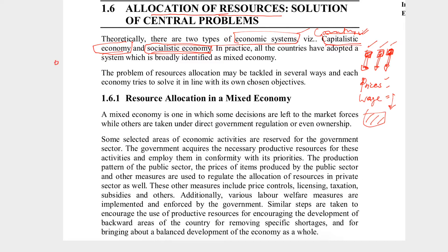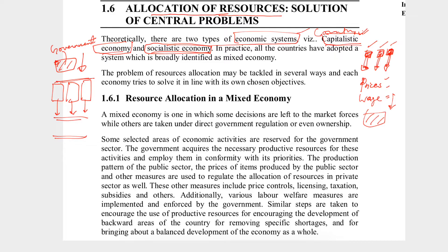If we talk about a socialistic economy, there is one owner — the government. Government becomes the owner of everything. In a socialistic economy, the government owns everything, produces all goods, and fixes rates so people don't face difficulties. In a fair socialistic economy, everyone gets equal rights over all resources. But this has all become history now — no country is purely like this. For socialism, we have USSR as an example, and for capitalism, you can take all of Europe.